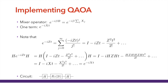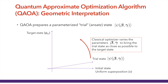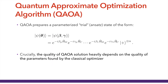Now, how does QAOA actually solve the problem? We have this ansatz state. We start in uniform superposition and want to prepare the target state. At each step, we prepare this trial state by applying this circuit, and then we vary the parameters beta and gamma using a classical optimizer to get our trial state as close as possible to the target state. Crucially, our ability to find a good solution depends on our ability to find good parameters.